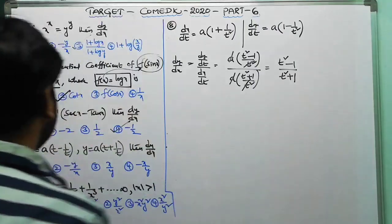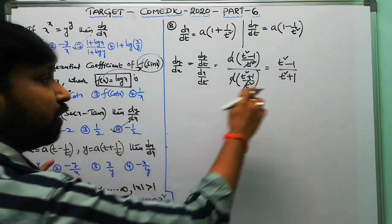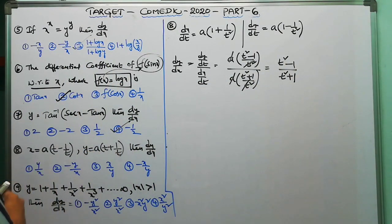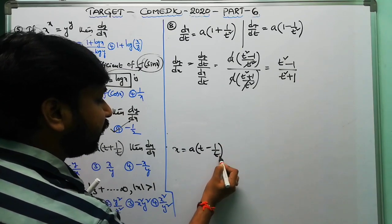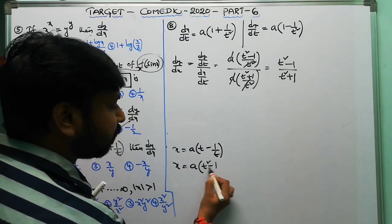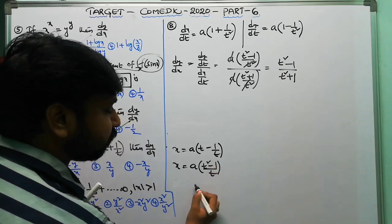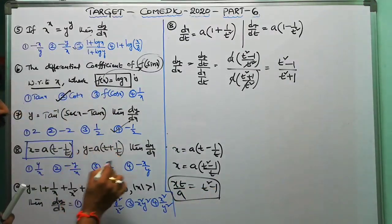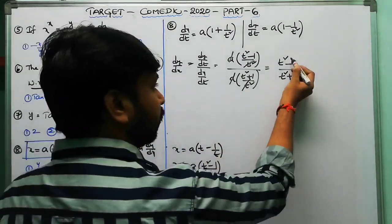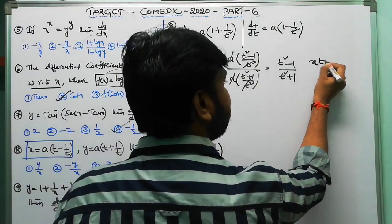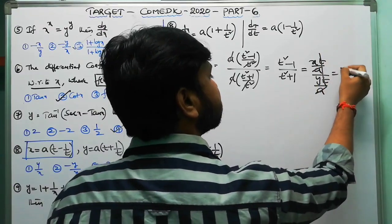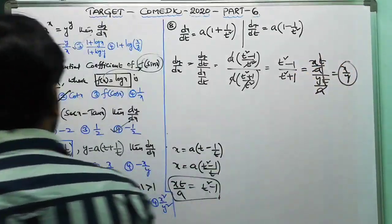The answer is (t² − 1)/(t² + 1), but options are not in terms of t, so convert using the original relations. From x = a(t − 1/t), we get xt/a = t² − 1. Similarly, yt/a = t² + 1. So (t² − 1)/(t² + 1) equals (xt/a)/(yt/a) = x/y. The correct answer is x/y.